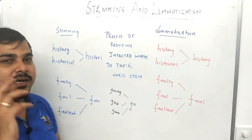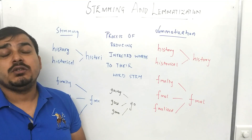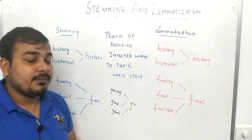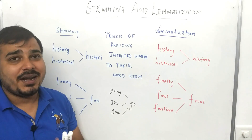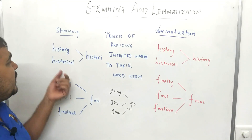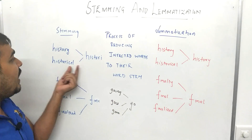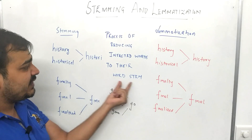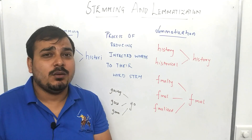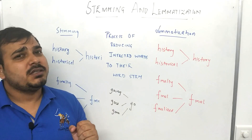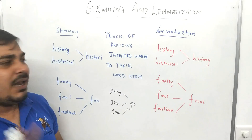Now why do we require stemming? In NLP, most use cases like sentiment analysis, spam classifiers, and understanding restaurant reviews to provide ratings — in those use cases, the most important thing in the comments or words that people put is the word stem, the base word. By just having that base word, we will be able to determine whether that word is positive or negative.